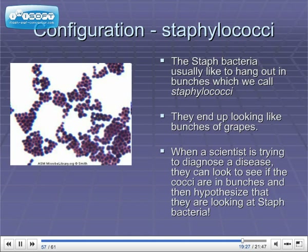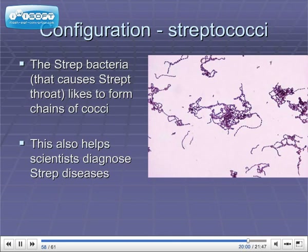The staph bacteria usually like to hang out in bunches — we call them staphylococci. They end up looking like a bunch of grapes. So when a scientist is trying to diagnose a disease, they can look to see if the cocci are in bunches and hypothesize that they may be looking at staph bacteria. Just because you see this in a gram stain doesn't mean you can definitely say it's a staph infection, but it's another hint to get closer to a diagnosis. The strep bacteria that causes strep throat likes to form chains of cocci, so sometimes we call that streptococci. This also helps scientists diagnose strep diseases, but you'd still need to do more tests to be sure.